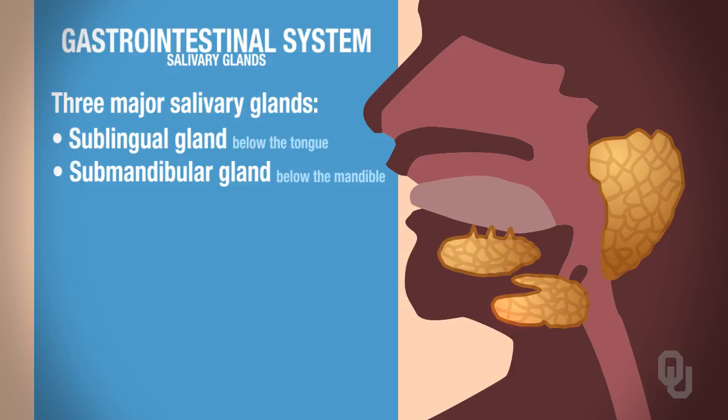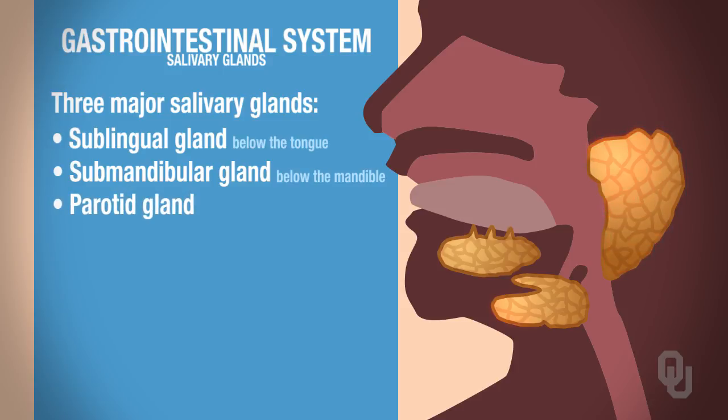And then there's the parotid gland. If you look here, this is the gland that would be associated with the jawline, just above the jawline, but in front of the ear.